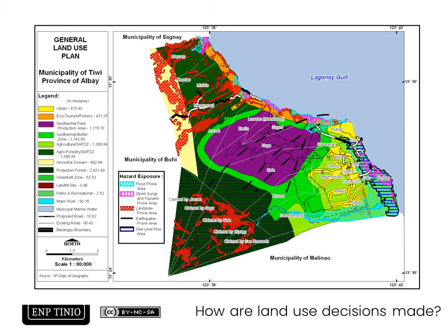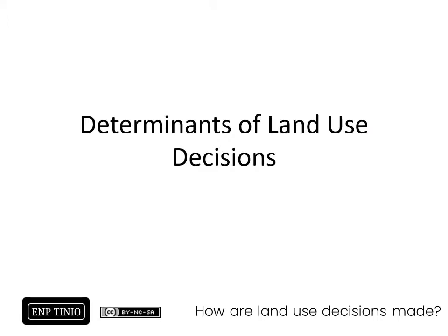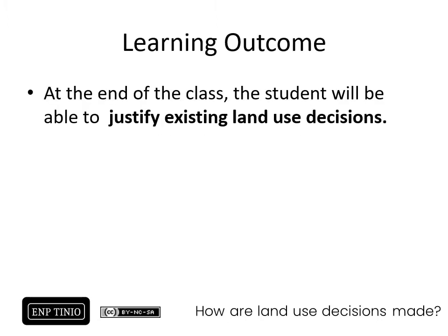Welcome to this class on how land use decisions are made. This is an introductory class on how land use decisions are done and performed in the local planning processes of the Philippines. In the map you see, this is the general land use plan that we completed for the municipality of Tiwi in the province of Albay in 2018. This land use map contains the results of various workshops, consultations, and field-based activities — the determinants of land use decisions.